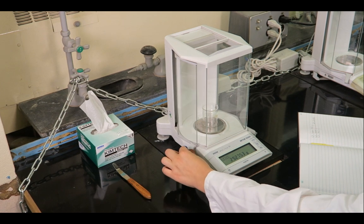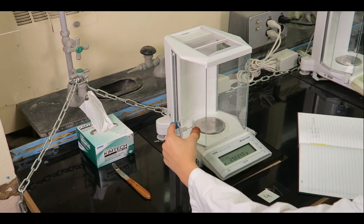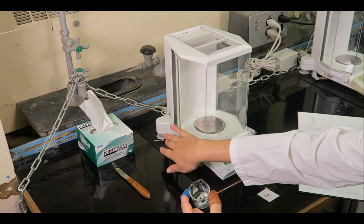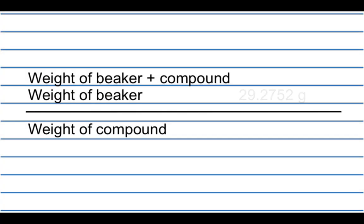Remove the beaker from the analytical balance and take it to the top loading balance. Don't forget to close the balance doors when not in use. Your laboratory notebook should be set up like this.